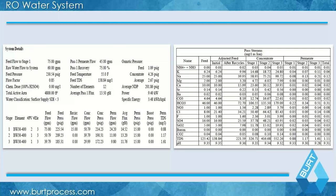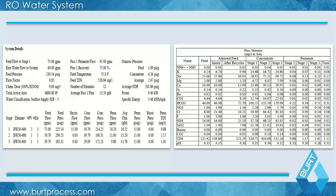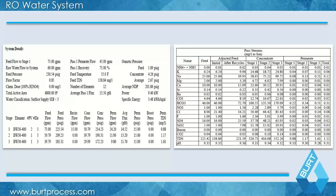Poll question: the water generation rate of a high purity water system is — A: the loop distribution rate; B: the reverse osmosis or pretreatment generation rate; C: the final filter throughput; or D: the number of mixed bed canisters. The answer is B — the reverse osmosis and pretreatment generation rate. That's where you're actually generating water, and that's one of the major design parameters.